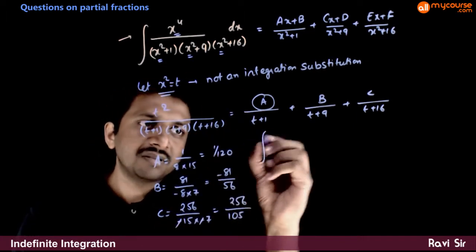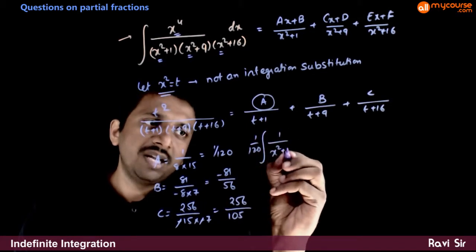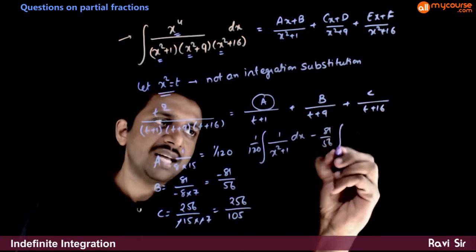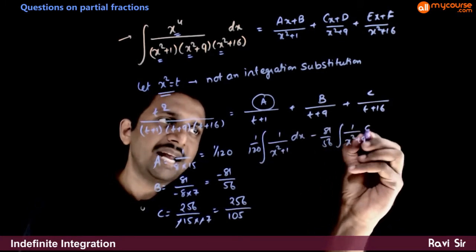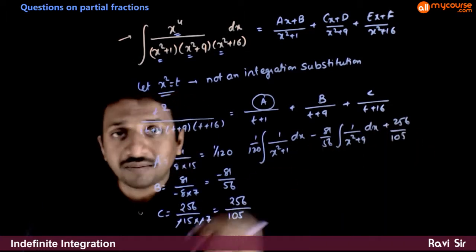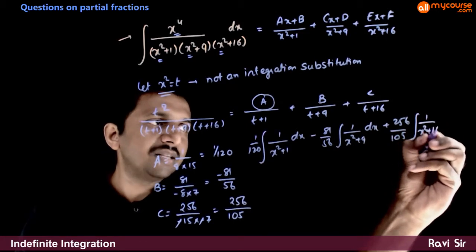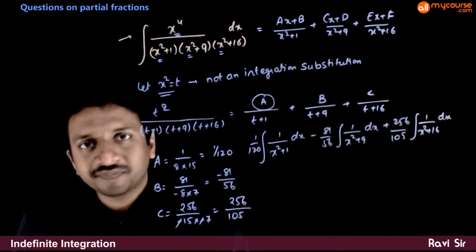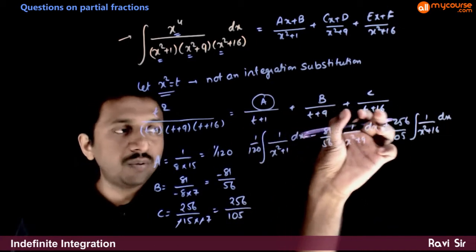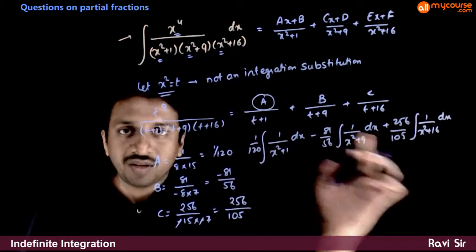This integration becomes 1 by 120 times 1 by x square plus 1 dx minus 81 by 56 times integration of 1 by x square plus 9 dx plus 256 by 105 times integration of 1 by x square plus 16 dx. I have done the partial fractions and then back substituted t equal to x square. So the integration got split into 3 terms.